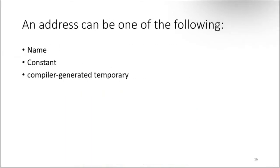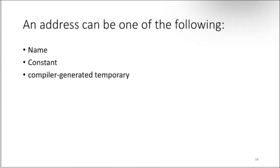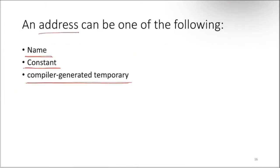An address can be one of the following: it can be a name, it can be a constant, or it can be a compiler-generated temporary variable like t1, t2, t3, t4. All these things can be treated as addresses here.